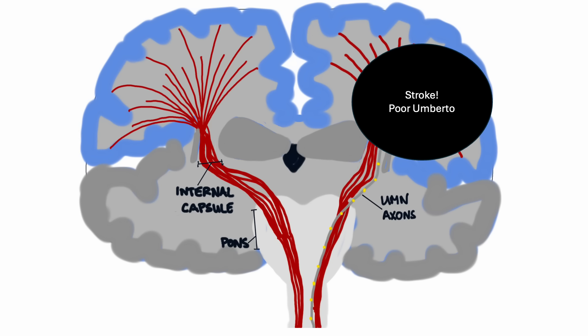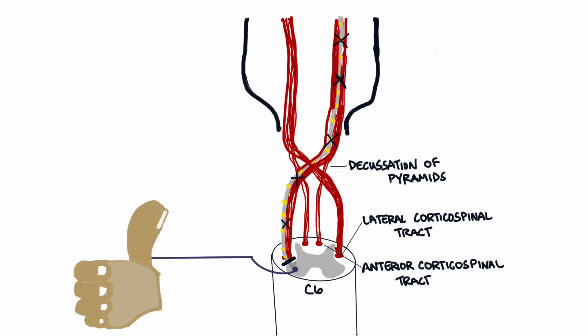Now we know how everything is supposed to work. But what happens if something goes wrong? What if the person has a stroke and damages the upper motor neuron? Poor Umberto. If Umberto is blocked or damaged, the lower motor neuron will have no input from the brain. That means that there is no motor connection with the lower motor neuron, so its muscle is weak or not working at all.